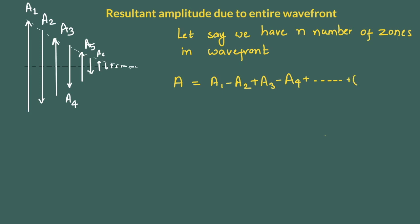Now if nth zone is even that would be minus a n and if nth zone is odd it would be plus a n. So we can rewrite that as minus 1 raise to n minus 1 a n.